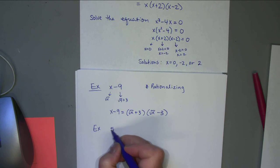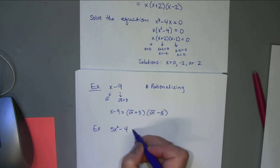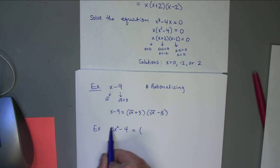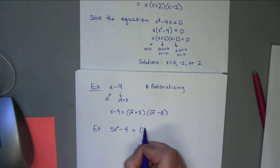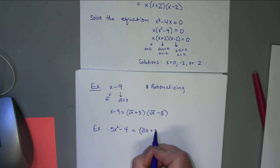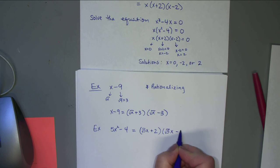One more example of this type: since we can't take the square root of 5 nicely, an expression like 5x - 4 would factor as (√5·x + 2)(√5·x - 2), since the square root of 4 is 2.